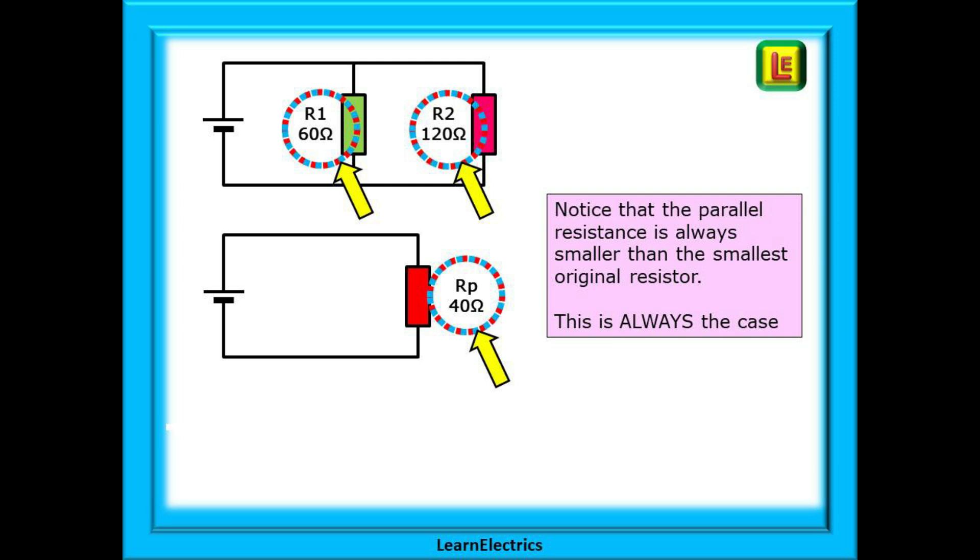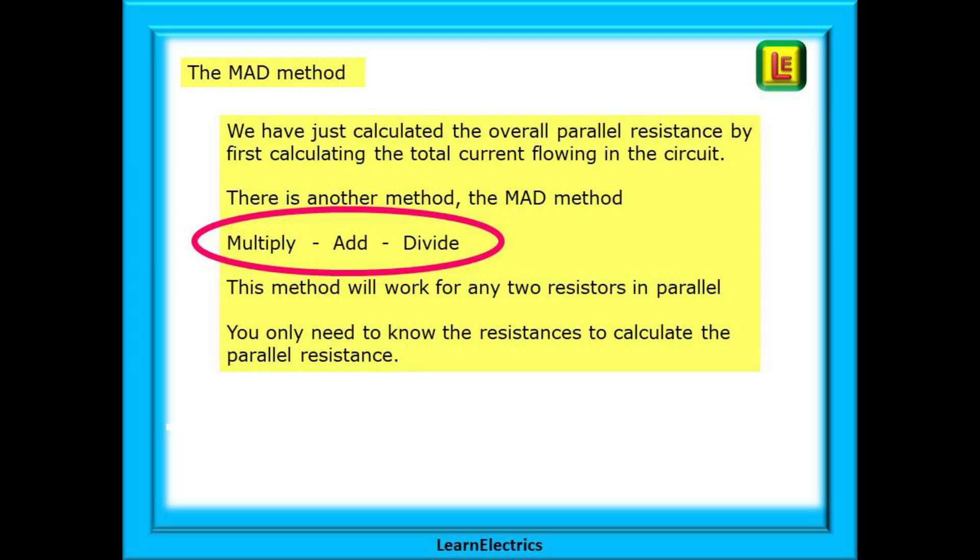If your calculation ever shows this as being bigger, then you've done something wrong. The parallel resistance will always be smaller. We've just calculated the overall parallel resistance by first calculating the total current flowing in the circuit. To do this we also needed to know the circuit voltage.